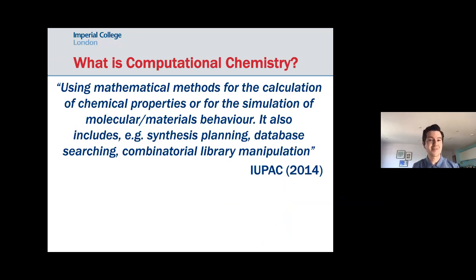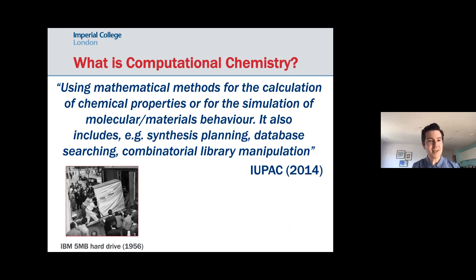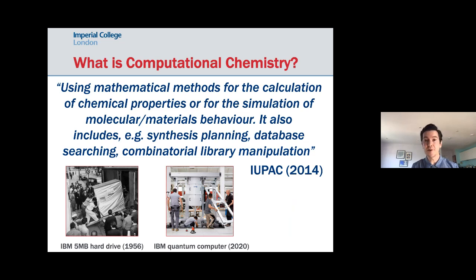That brings me to computational chemistry as my main field. The current IUPAC definition describes it as using mathematical methods for the calculation of chemical properties or simulation of molecular and materials behaviour, including synthesis planning, database searching, and combinatorial library manipulation. This discipline has evolved alongside computers. To put it in perspective: in the 1950s, a state-of-the-art IBM five-megabyte hard drive was loaded onto a truck. This year has seen the launch of the first commercial quantum computer, also from IBM, with similar dimensions — moving from classical to quantum computing.